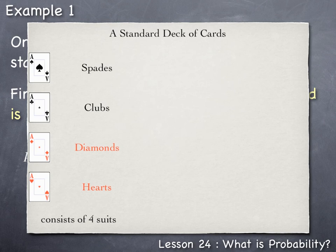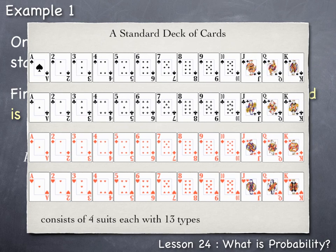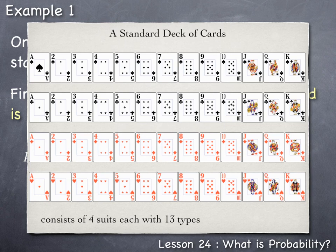Each of these four suits is represented by 13 different types of cards. These 13 types are numbered 1 — which is referred to as an ace — up through 10. The three additional cards, referred to as face cards, are Jacks, Queens, and Kings.